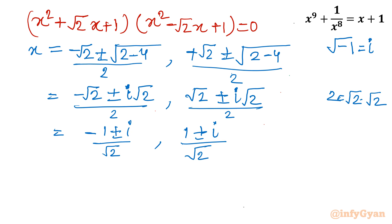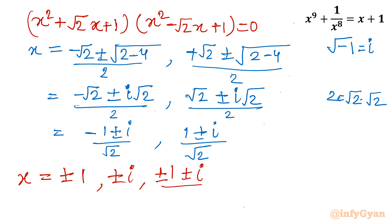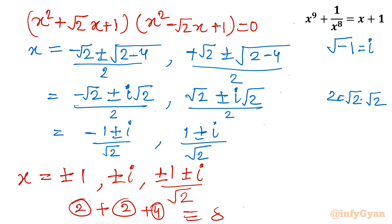From equation 1, x^8 - 1 = 0, there are 8 solutions: x = ±1, x = ±i, and the four complex values (-1±i)/√2 and (1±i)/√2. That is 2 + 2 + 4 = 8 solutions total, and out of these 8 solutions only 2 are real: x = ±1.